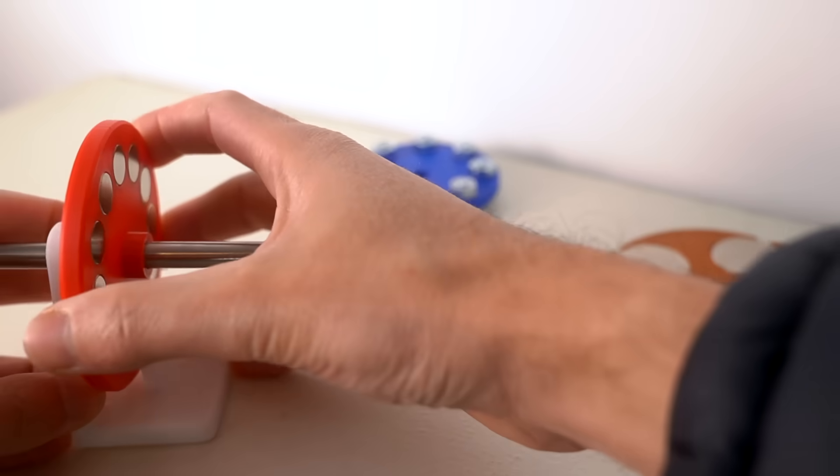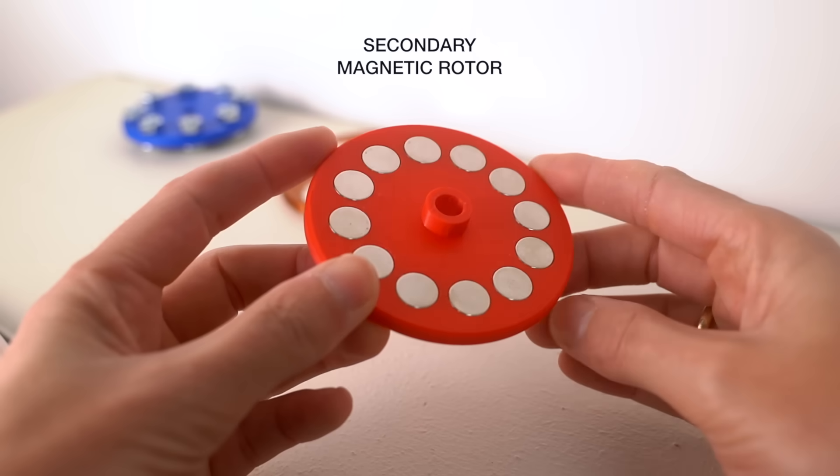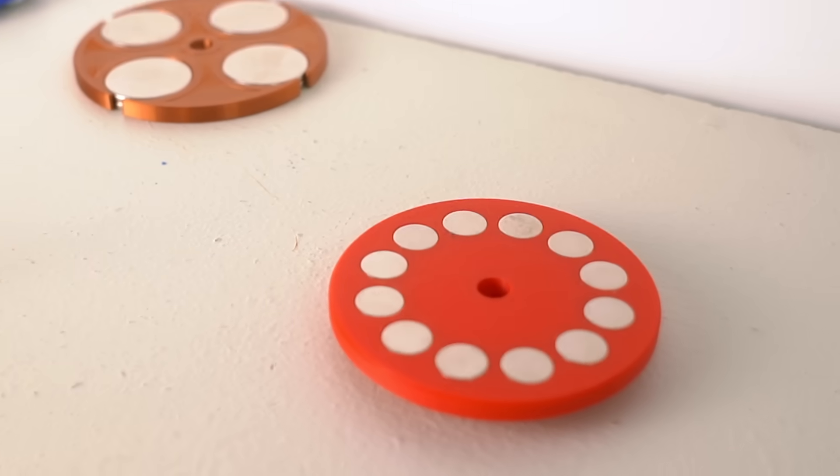And the last component we have is the secondary magnetic rotor. This one has 12 magnets of alternating polarity.